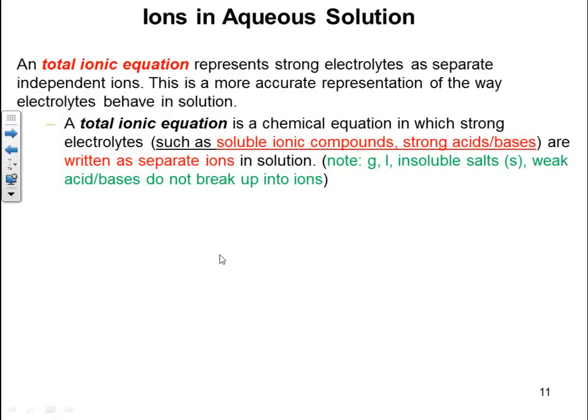The total ionic equation represents the strong electrolytes as separate independent ions. This is a more accurate representation of the way electrolytes behave in solution. The total ionic equation is a chemical equation in which strong electrolytes — such as soluble ionic compounds, strong acids, and bases — are written as separate ions. Note: gases, liquids, insoluble salts, and weak acids and bases do not break up into ions.